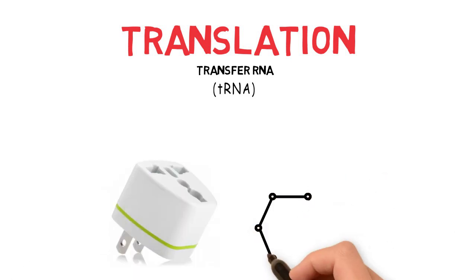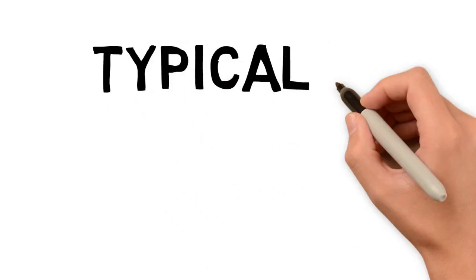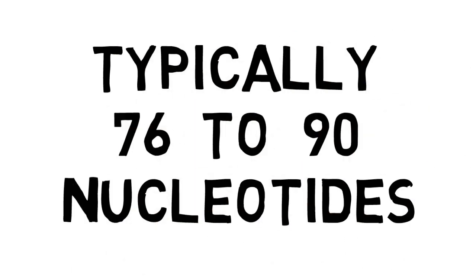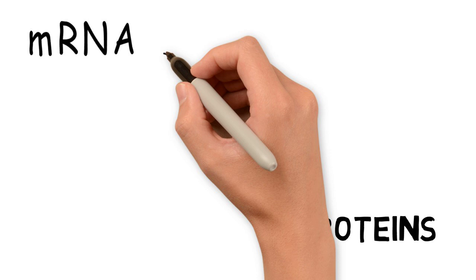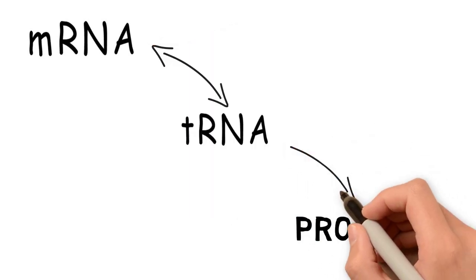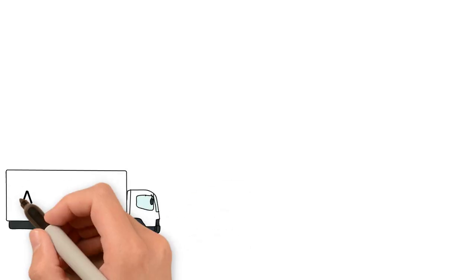A tRNA is an adapter molecule, typically 76 to 90 nucleotides in length, that serves as the physical link between the messenger RNA and the amino acid sequence of proteins. A tRNA molecule does this by carrying an amino acid, which is the building block of a protein, to the ribosome.